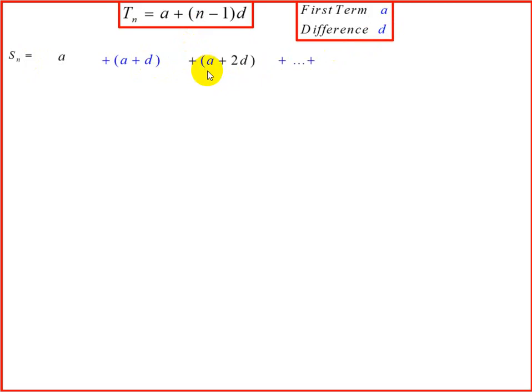This will continue until we reach the last term. The last term we refer to as the nth term, which is a plus n minus 1 into d. Then if we go back, our second last term will be a plus n minus 2d, and this will go on. So that's how we would find the sum to n terms.